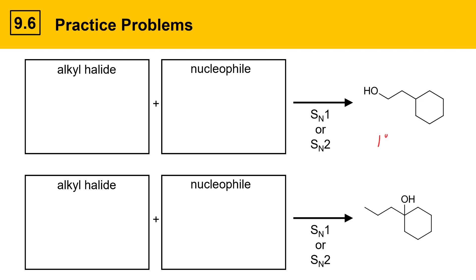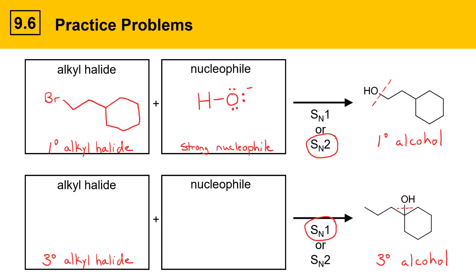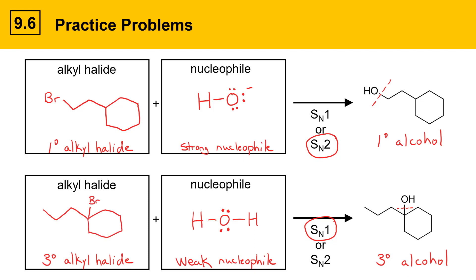We'll work some practice problems. Starting with the upper problem: this is a primary alcohol, and primary alcohols can come from primary alkyl halides. This is a good substrate for SN2 reactions because primary substrates are not very hindered, so we're going to need a strong nucleophile — hydroxide. The alkyl halide brings in all the carbon atoms and a leaving group. For the lower structure, this is a tertiary alcohol, and tertiary alcohols can come from tertiary alkyl halides. This is a good candidate for SN1 because tertiary alkyl halides are good substrates for SN1 reactions. We'll need a weak nucleophile — water — and our alkyl halide will be all of the carbon materials with a leaving group such as bromine.